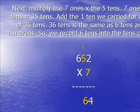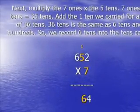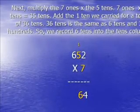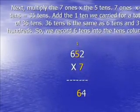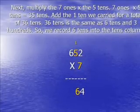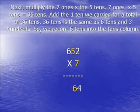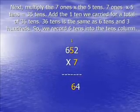Next, we multiply the seven ones by the five tens. Seven ones times five tens gets you 35 tens. Add to that the one ten we carried over for a total of 36 tens. With 36 tens, we actually have three hundreds and six tens. So, we record the six tens into the tens column.